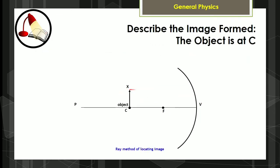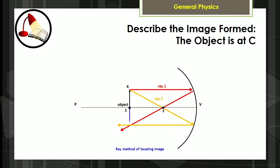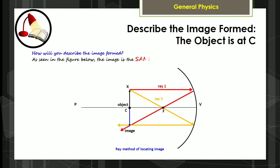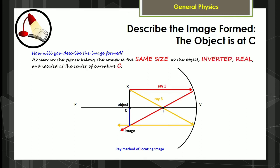For the next example, let us describe the image formed if the object is at the center of curvature C. As seen in the figure below, the image is the same size as the object, inverted, real, and located at the center of curvature C.